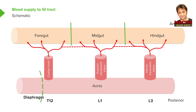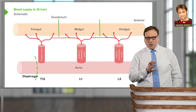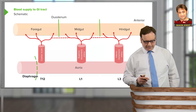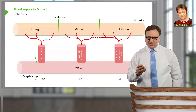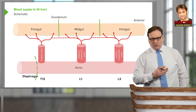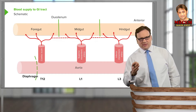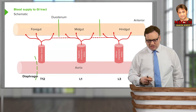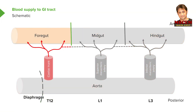The separation between the foregut and the midgut occurs at the duodenum, specifically the major duodenal papilla, which is halfway down the descending part of the duodenum. The midgut becomes the hindgut two-thirds of the way along the transverse colon — so two-thirds is midgut and the remaining third is hindgut. The celiac trunk supplies the foregut, the superior mesenteric artery supplies the midgut, and the inferior mesenteric artery supplies the hindgut.